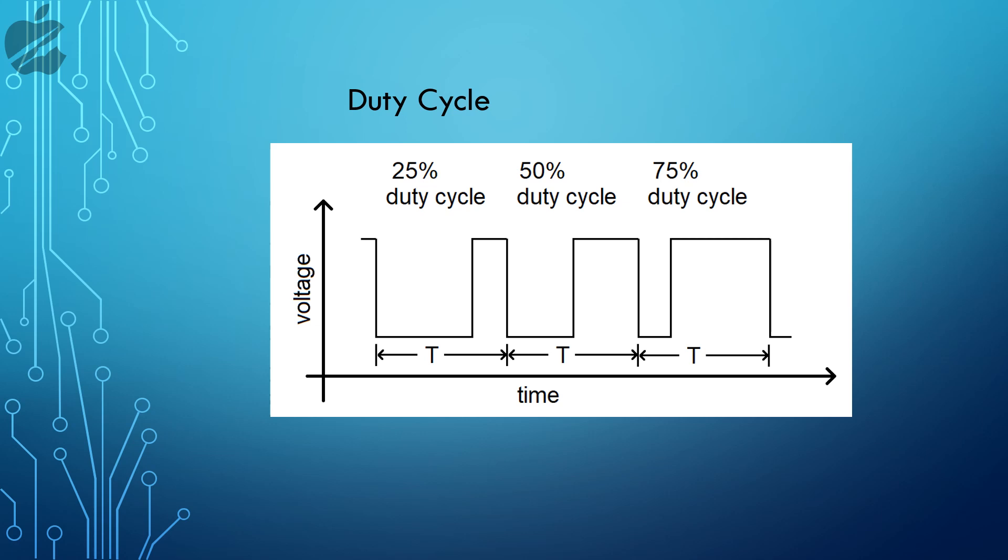Duty cycle is the percentage of ratio of pulse duration or pulse width to the total period of waveform.